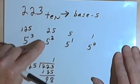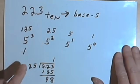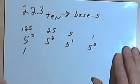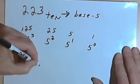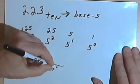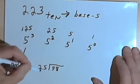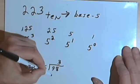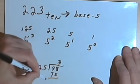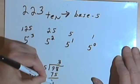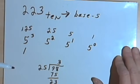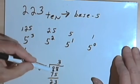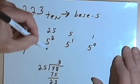Now I want to find out what I have in the 5 squared column. So I'm going to take that remainder of 98 and divide that by 5 squared, which is 25. 25 goes into 98 three times. 3 times 25 is 75, and my remainder is 23. Since 25 went into 98 three times, that means I've got a 3 in my 5 squared column.